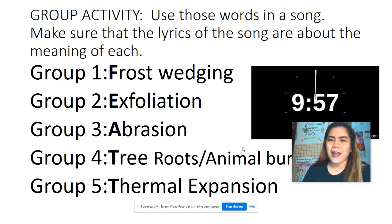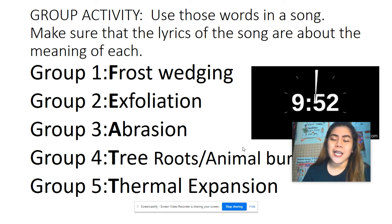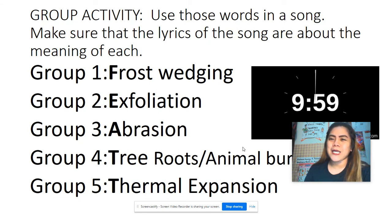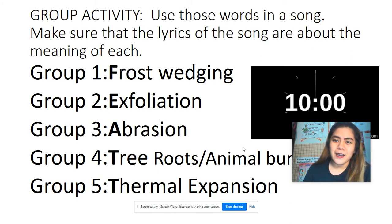I want you to remember the five major factors that cause weathering, with the abbreviation FEATT. F for frost wedging, E for exfoliation, A for abrasion, T for tree roots and animal burrowing, and the last T is for thermal expansion. That's all for this afternoon. Thank you for watching and thank you for listening. I'll just send you the activities later on about this topic.